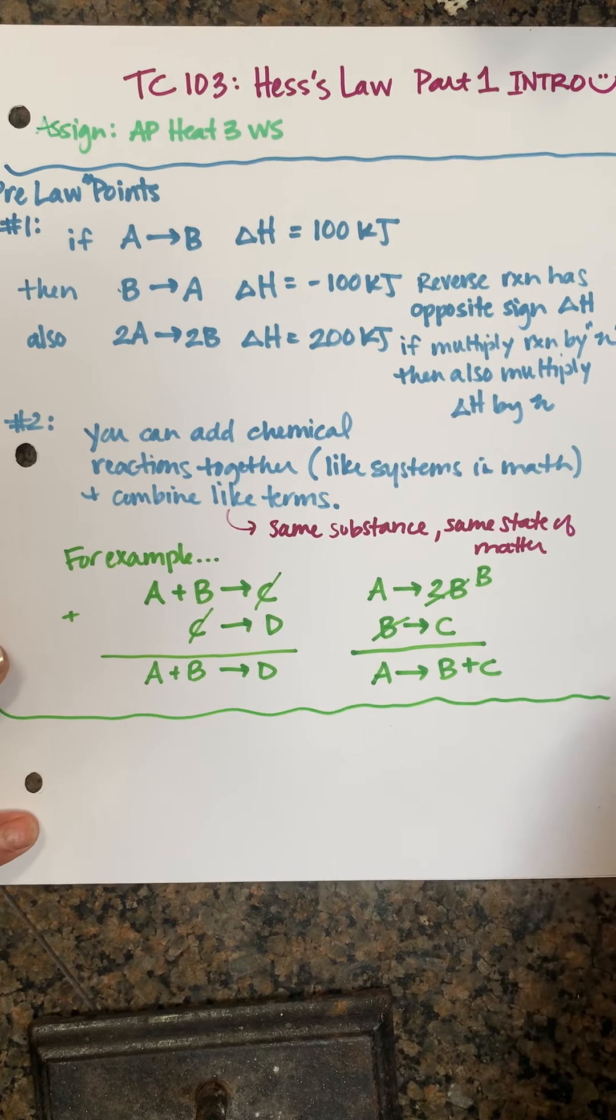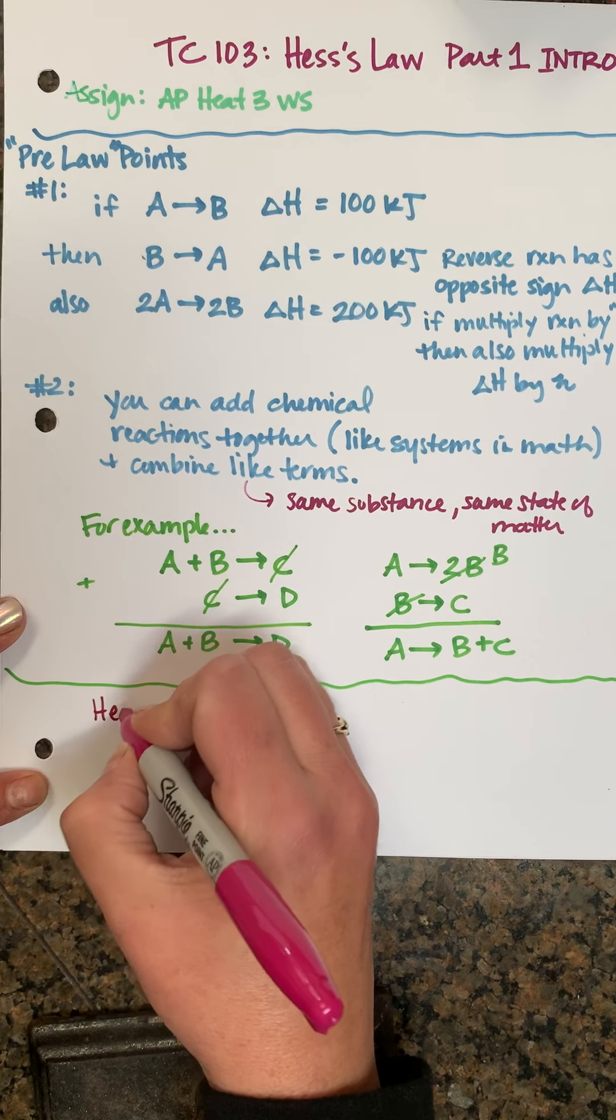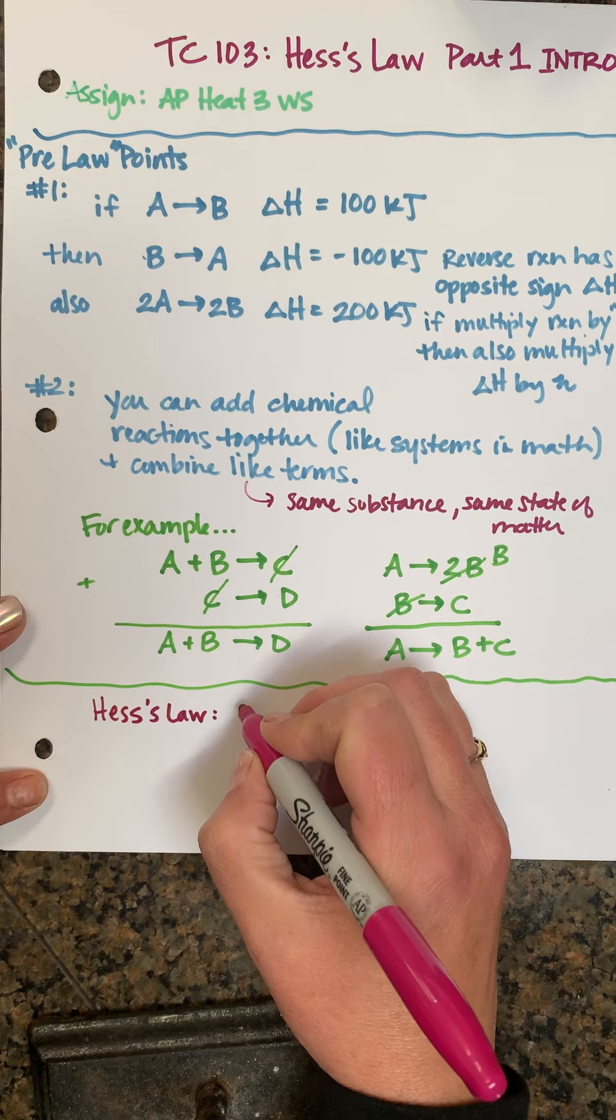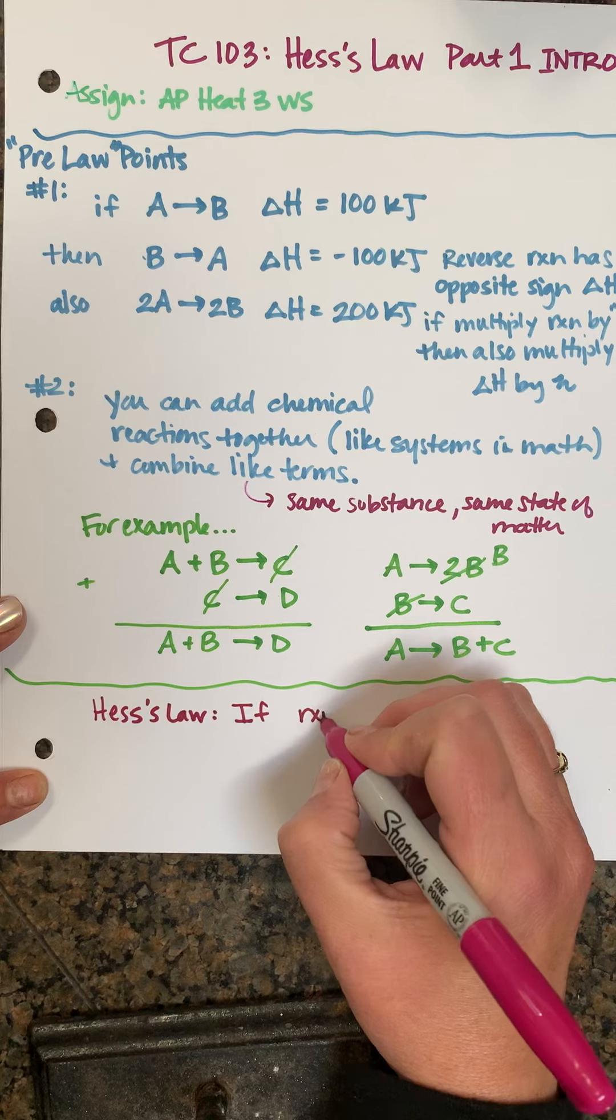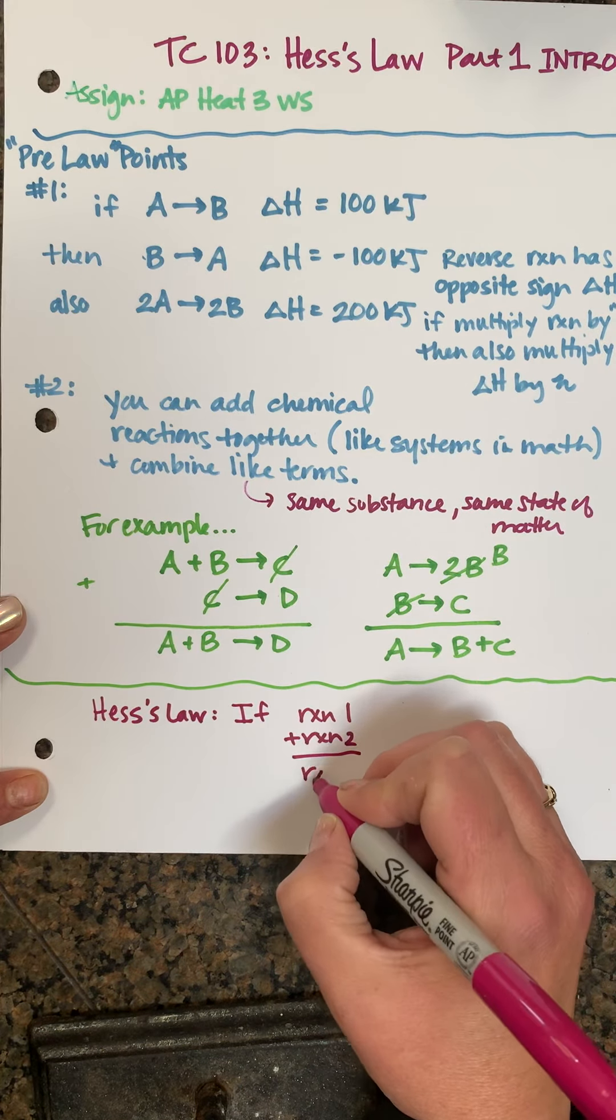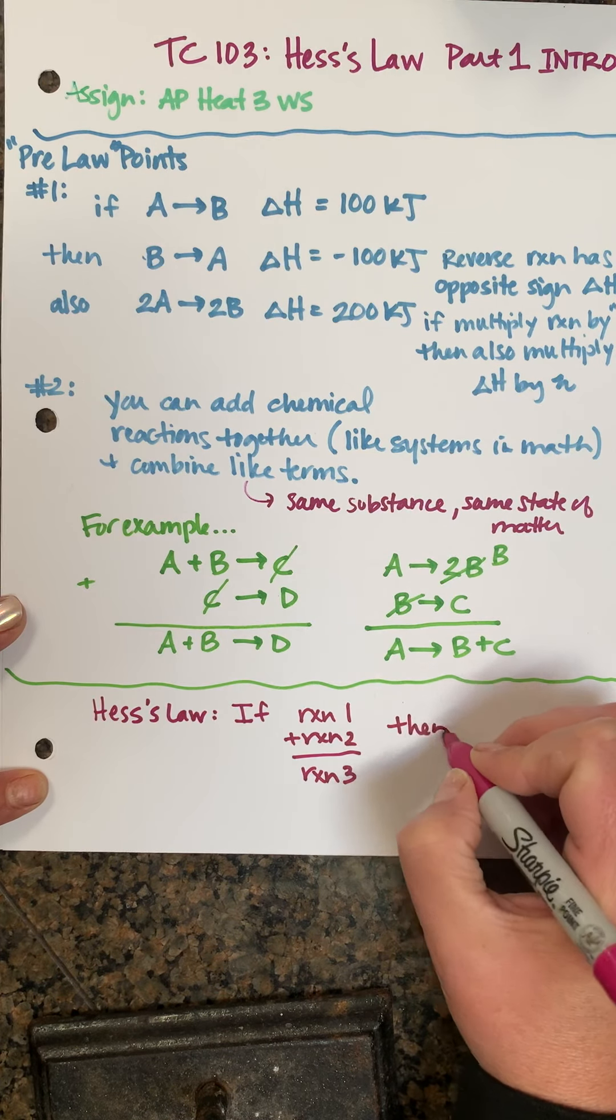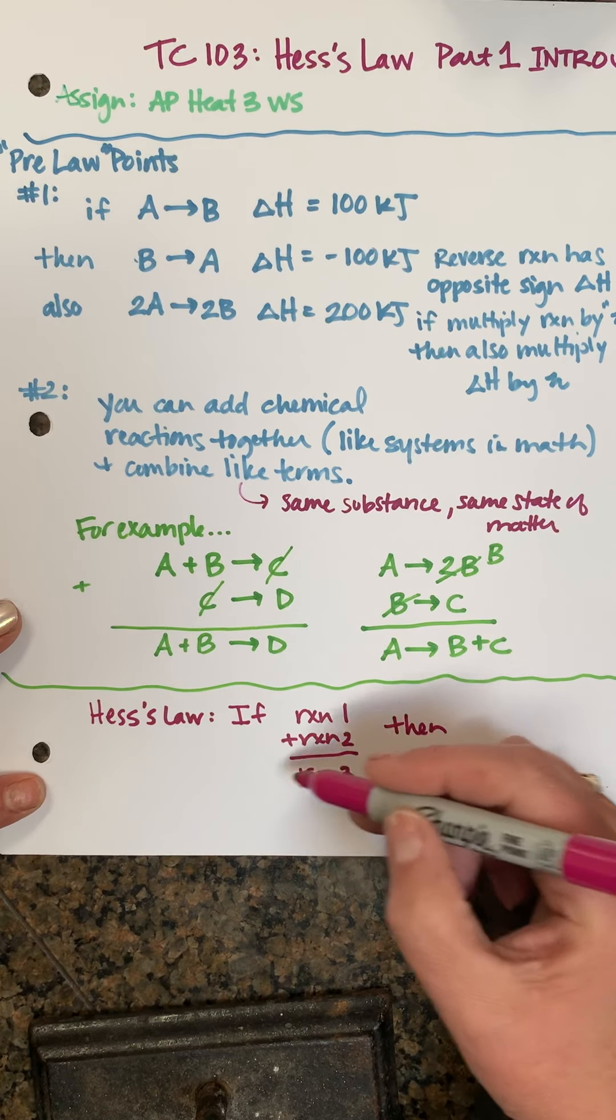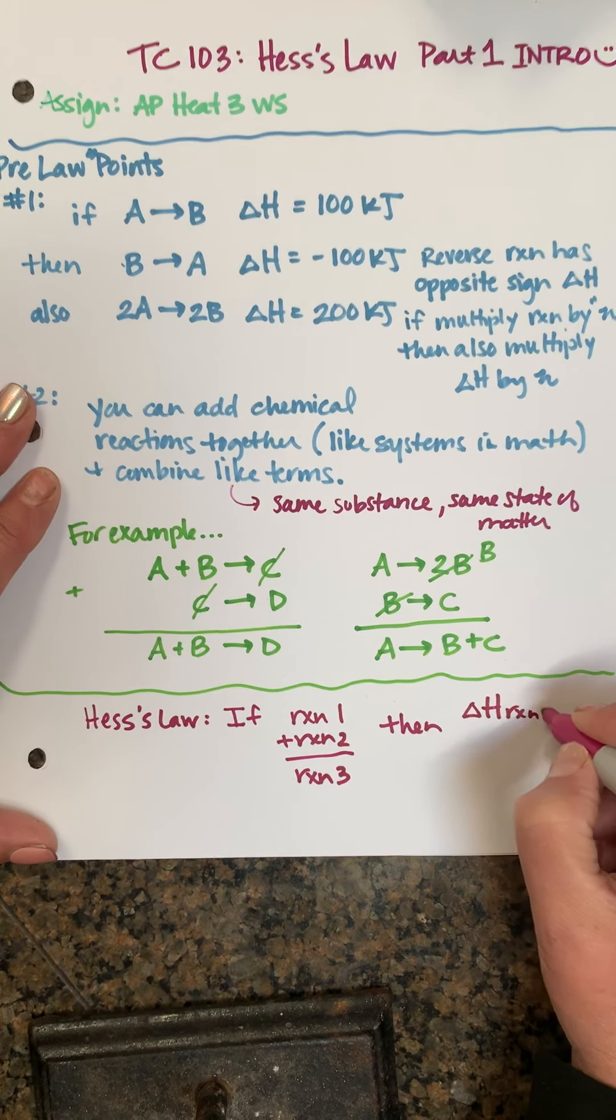Okay, so those are the three pre-law points, and here comes Hess's Law. It's pretty simple. Hess's Law says that if reaction 1 plus reaction 2 is equal to reaction 3, so if we can show that two reactions or three reactions or four reactions add together to give us a final reaction, then we would also know that the heat of reaction 1 plus the heat of reaction 2 is equal to the heat of reaction 3.